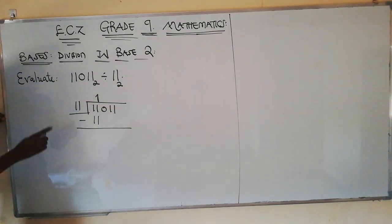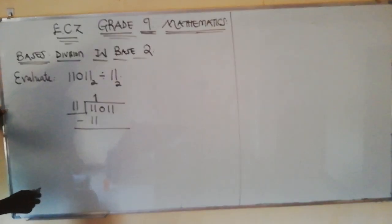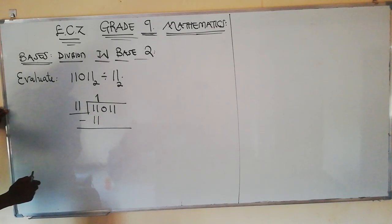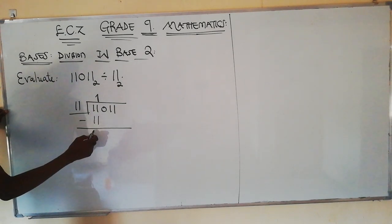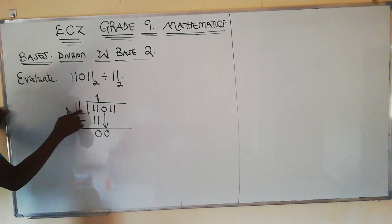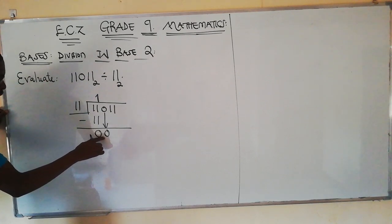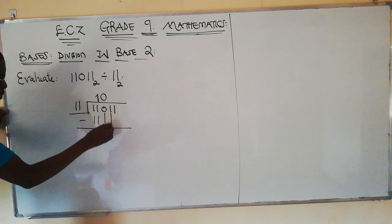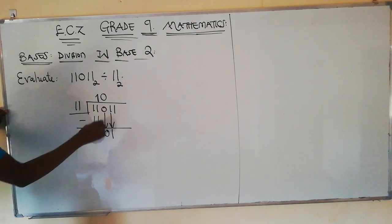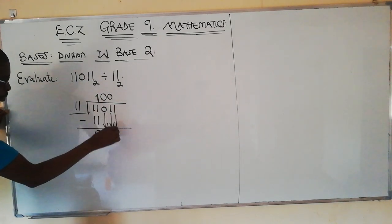Then you subtract to get the difference and the remainder. So 1 minus 1 will get a 0. 11 into 0, it can't, so we have to bring down a 0. 11 into 0, it can't, so we add a 0 and bring down a 1. 11 into 1, it can't, so we add a 0 and bring down a 1.